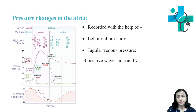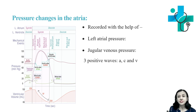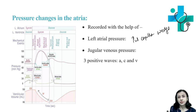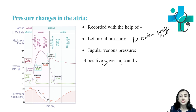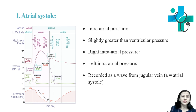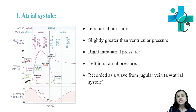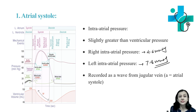Next is pressure changes in the atrium — in right and left atrium. These pressure changes are recorded with an intra-cardiac catheter. Left atrial pressure is determined by measuring pulmonary capillary wedge pressure, and jugular venous pressure equals right atrial pressure. When measuring atrial pressure, we find three positive waves — A, C, and V — and three negative descents — X, X1, and Y. During atrial systole, because atria are contracting, there is an increase in atrial pressure: right intra-atrial pressure is about 4 to 6 mmHg and left atrial pressure is about 7 to 8 mmHg. This is recorded as the positive A wave in jugular venous pressure.